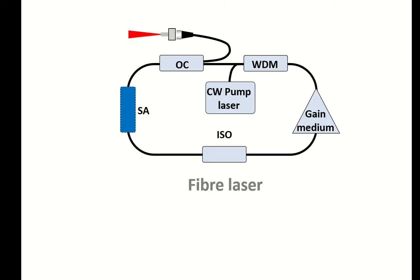Another geometry is a fiber geometry. In fiber geometry you need a fiber gain material, you have an isolator to force a laser to work only in one direction, otherwise the laser pulses will collapse and the laser cavity will not work properly. Then you need to have a saturable absorber, an optical coupler, and WDM. WDM is a device that allows you to couple a CW pump beam into the laser cavity very easily.